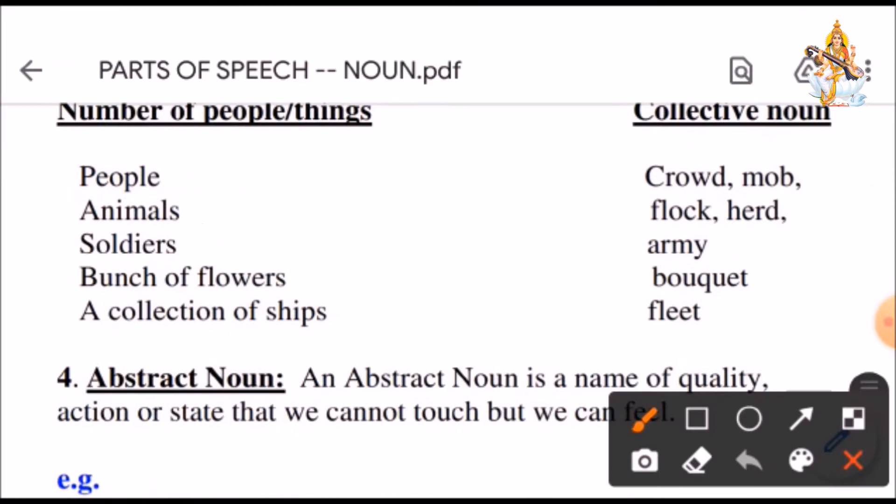For example, see, people together are called crowd or a mob. Animals are called flock or herd when they are together. Soldiers together are called army. Bunch of flowers is a bouquet. A collection of ships is fleet.